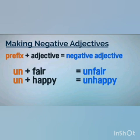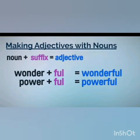Now let us see how to make adjectives with nouns. Noun plus suffix is equal to adjective. For example, 'wonder' plus '-ful' is equal to 'wonderful', and 'power' plus '-ful' is equal to 'powerful'.